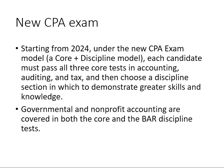Then you're going to choose one discipline section in order to demonstrate greater skills and knowledge. You're going to see more difficult analysis questions. The areas include business analysis and reporting, which is basically more advanced financial accounting, and one is accounting information systems.